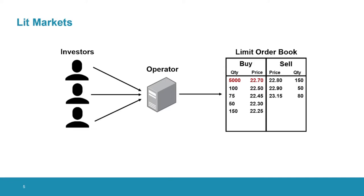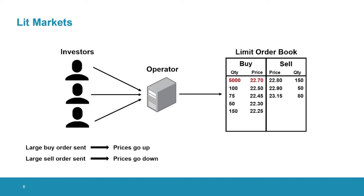The volume to be traded by this order is quite high, so it will take a long time for this order to be completely filled. And if anyone wants to buy some of this stock in the meantime, they will have to provide a better price. Because of this, whenever a large buy order is submitted, prices will tend to go up, and the other way around whenever a large sell order is submitted, prices will tend to go down.